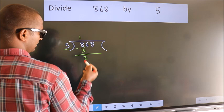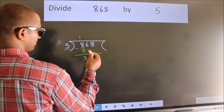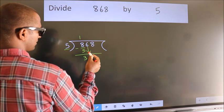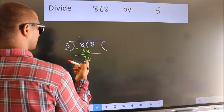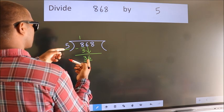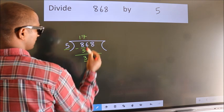After this, bring down the next number. So 6 down, giving us 36. A number close to 36 in the 5 table is 5 times 7, which is 35.